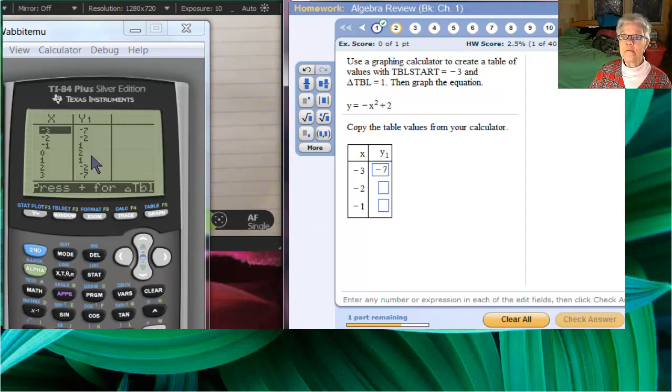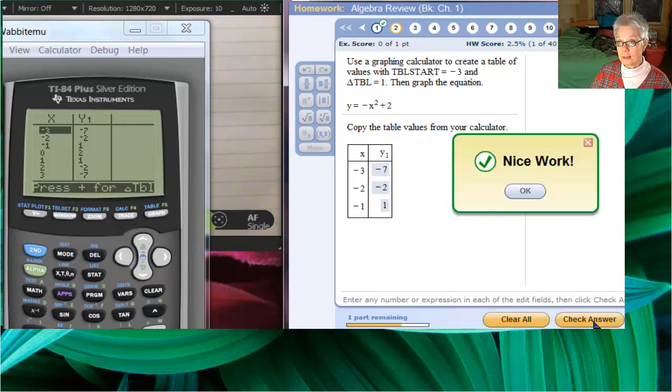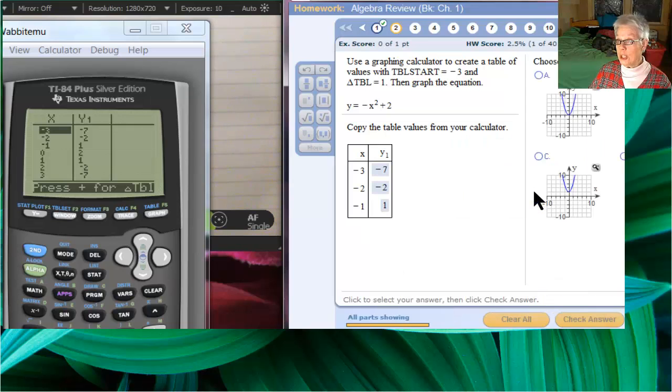Look, the points are already there for us. If x is negative three, y is negative seven. If x is negative two, y is negative two. If x is negative one, y is one. Those are three points. Check the answer. We did brilliantly.